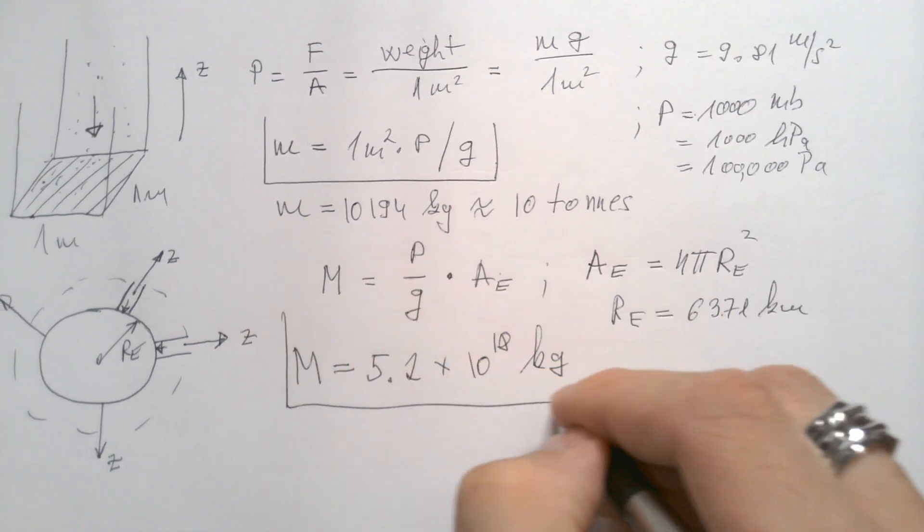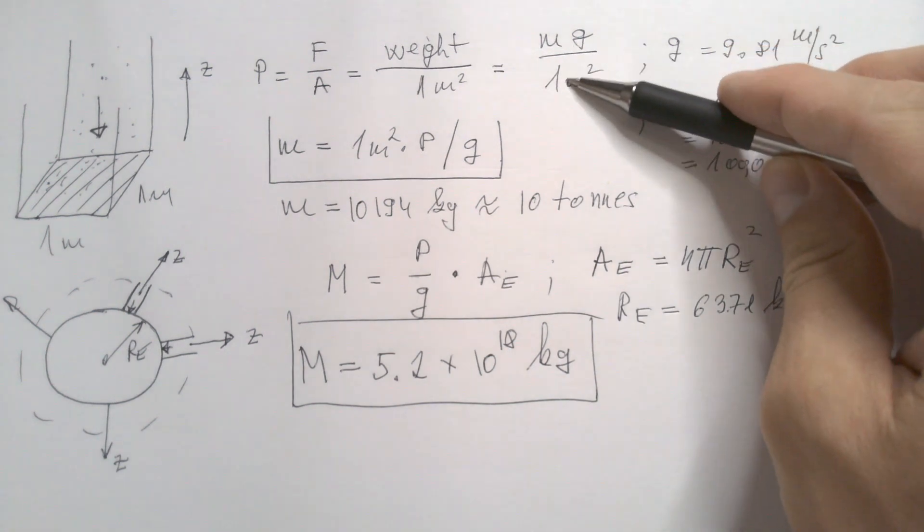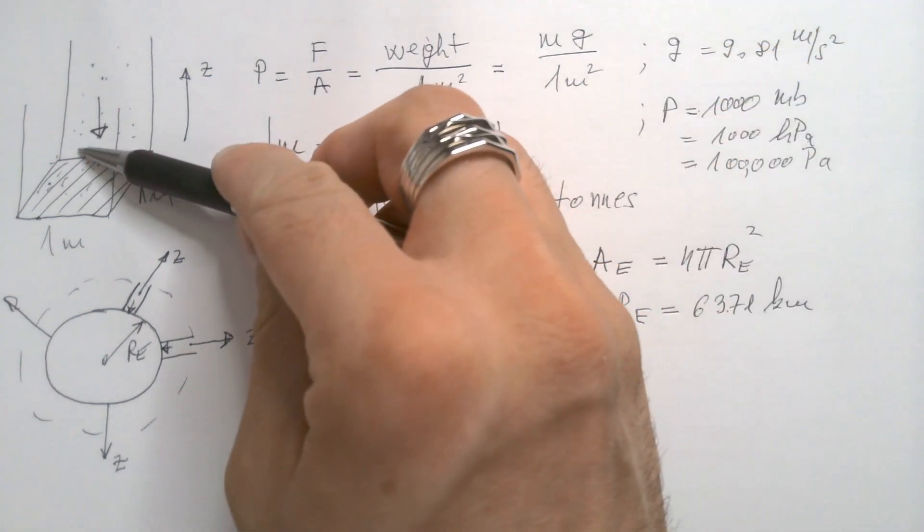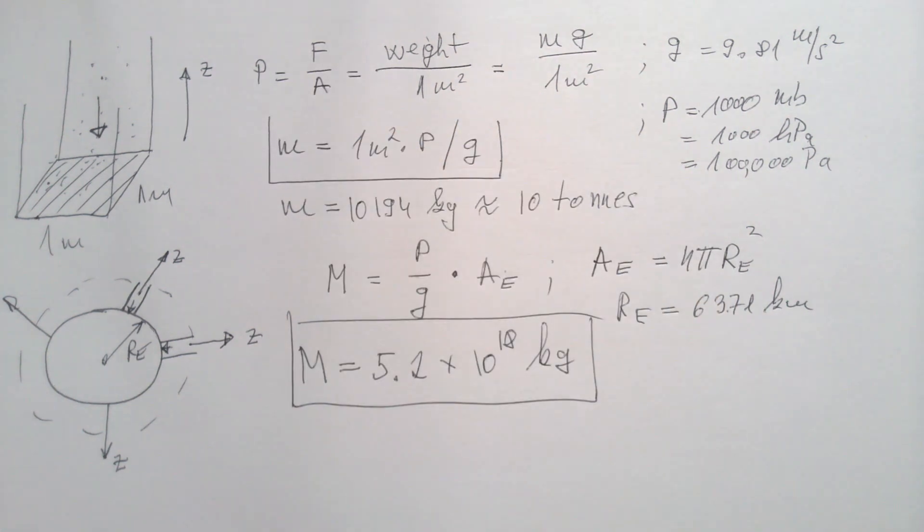You see, it is impossible for us to really measure mass of the atmosphere, but knowing physics, and in this case, second Newton's law, and the definition of pressure, we can easily calculate astonishing number that is 5.2 times 10 to power 18 kilograms of air in our atmosphere.